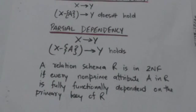A relation schema R is in second normal form if every non-prime attribute A in R is fully functionally dependent on the primary key of R.